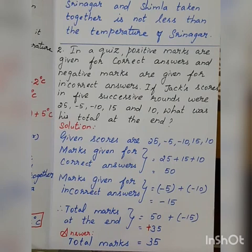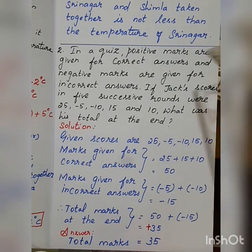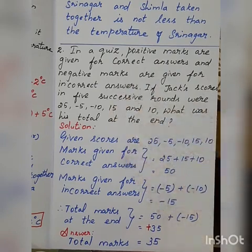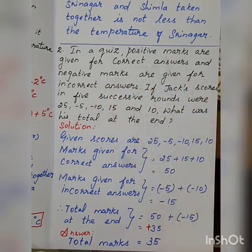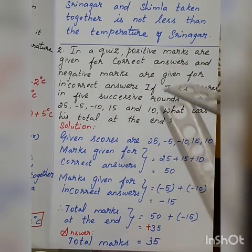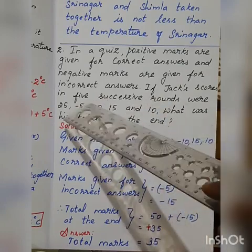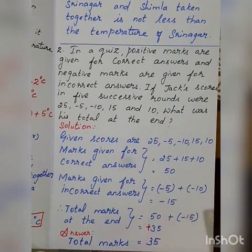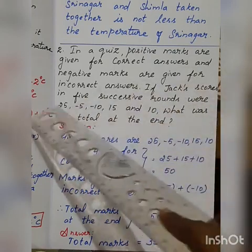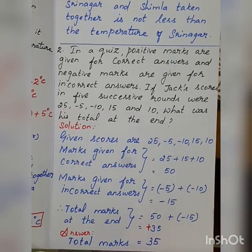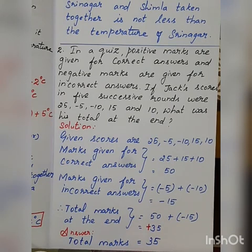Second question: In a quiz program, positive marks are given for correct answers and negative marks are given for incorrect answers. If Jack scores in 5 successive rounds — successive means next rounds — what were his scores? 25, minus 5, and minus 10, 15, and 10. What was his total at the end of the session? That is the question.